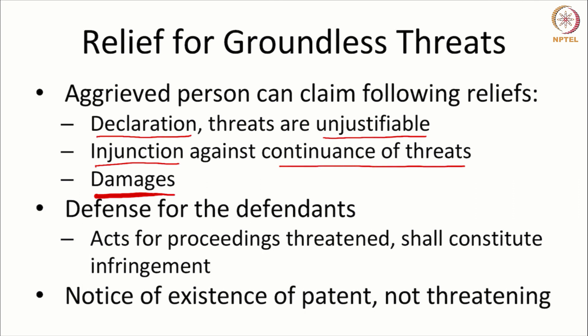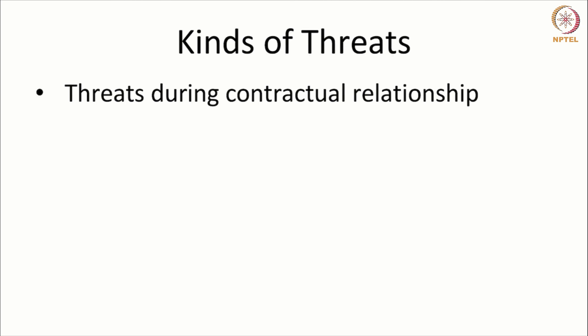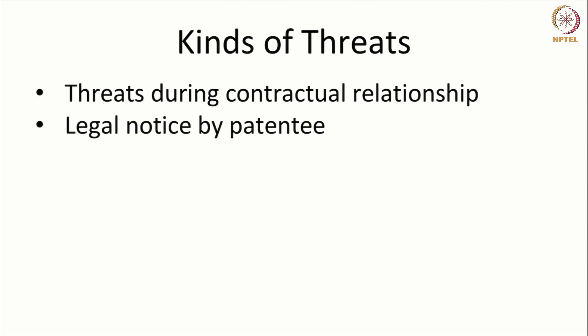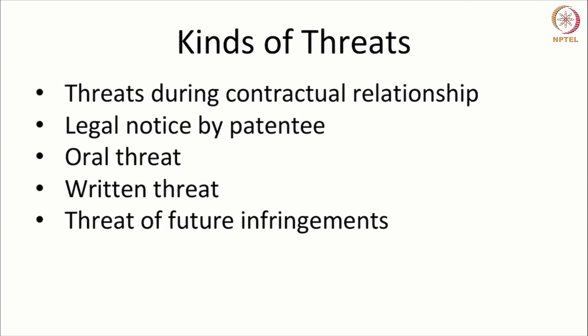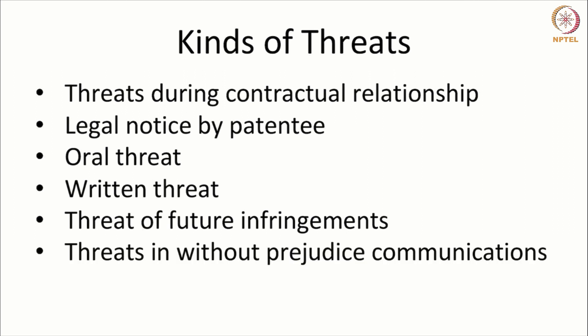The mere fact that the patentee points to the existence of a patent will not amount to a groundless threat. The threat has to be explicit and groundless in the sense that it is being made without any objective of filing an infringement suit. There could be threats during a contractual relationship between a patentee and a licensee, threats by way of a legal notice, oral threats during discussions, written threats, threats of future infringements, and threats manifest in without-prejudice communications.